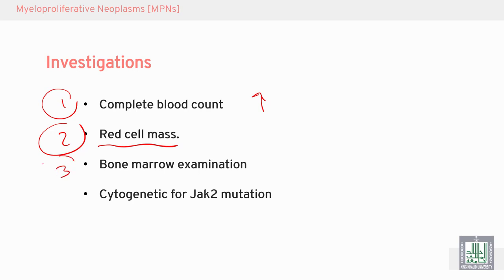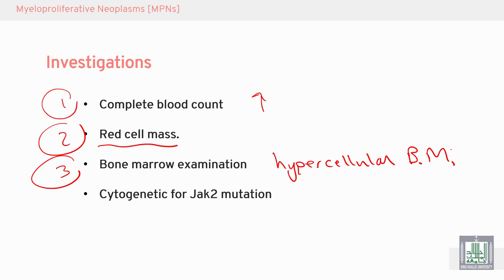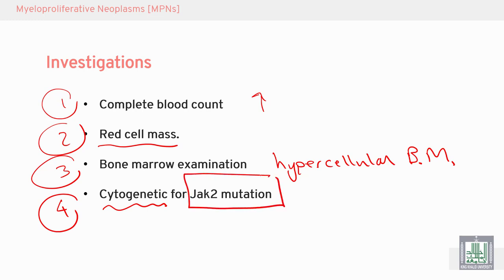Bone marrow examination: we can aspirate or take a bone marrow biopsy. We can see hypercellular bone marrow — hyperplastic and markedly increased in cells, especially in the erythroid series. Cytogenetic studies are performed to detect the JAK2 mutation, which is responsible for the increase in proliferation of red cells and other cells in the bone marrow.